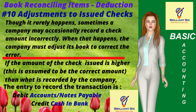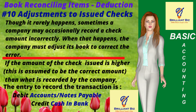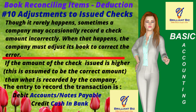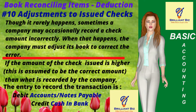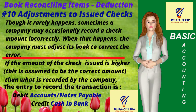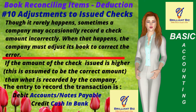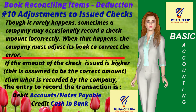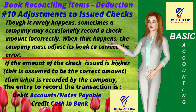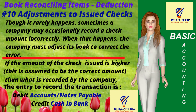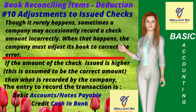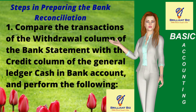Item 10: Adjustments to issued checks. Sometimes a company may occasionally record a check amount incorrectly. When that happens, the company must adjust its books to correct the error. If the amount of the check issued is higher — assumed to be the correct amount — than what is recorded by the company, the adjusting entry is debit accounts or notes payable, or any other appropriate liability account, and credit cash-in-bank for the difference between the check amount and the corresponding original credit entry in the GL cash-in-bank account.